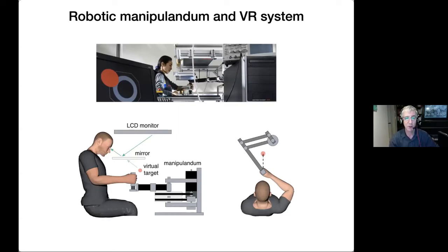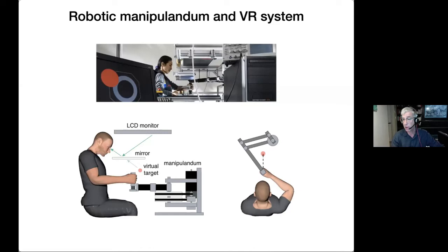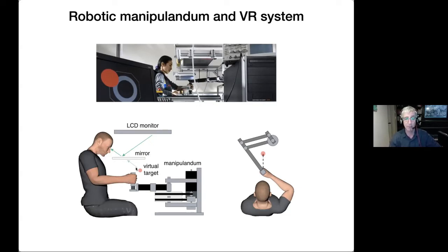So we build robotic devices where the robot can simulate novel dynamics and perturb the arm. The studies I'm going to talk about are done with a two-dimensional robot. Here's a participant in one of our rigs. The robot can move in two dimensions, track the movement, and it has torque motors that can generate forces at the hand. We have a monitor facing downwards and a mirror so that images appear in the plane of the movement, giving people virtual targets or feedback of their own limb.